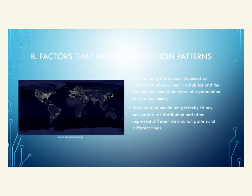It's generally difficult to place a population exactly into one distribution pattern — they may fit different ones at different times. A useful example is looking at Earth from space: the lights indicate where much of the population is located in cities. This spread is what we refer to as a distribution pattern — how different populations spread out.